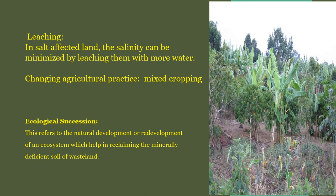Leaching is used for land that is salt-affected, alkaline, or saline. The salinity can be minimized by leaching with more water — by flooding the land with water — or by providing chemicals such as gypsum and other chemical compounds, which can convert such lands into cultivable land.